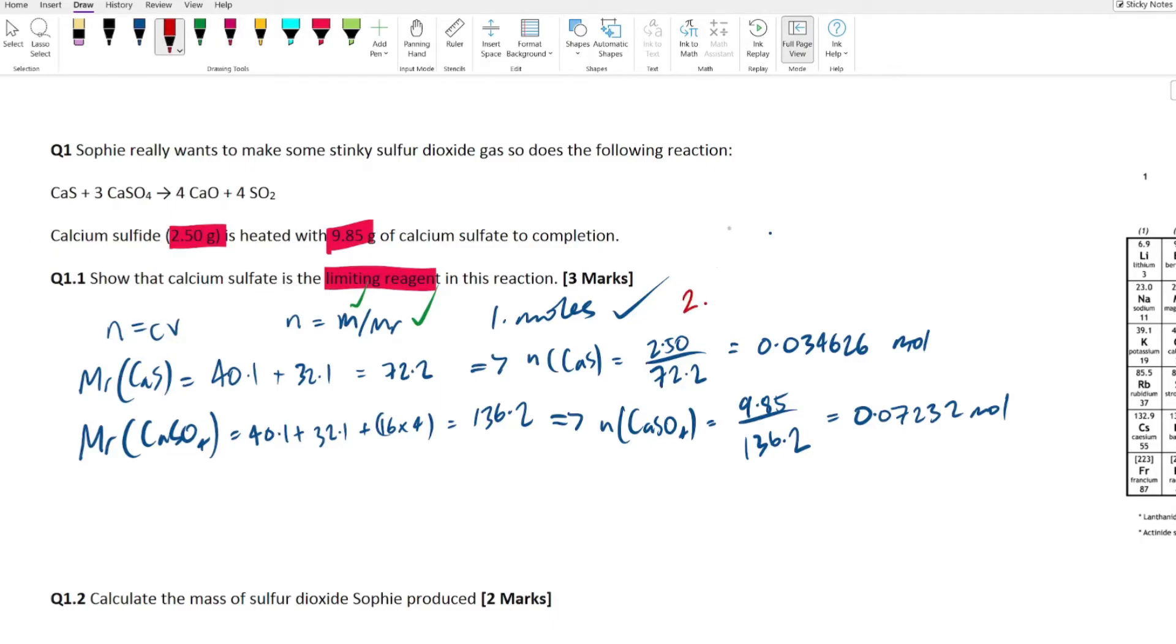All right, let's move this over and we're going to do these calculations in the calculator. We've got 2.5 and that is over 72.2. That gives us an answer of 0.034626 moles. Let's do this next one. 9.85 and that would be over 136.2. 0.07232. All right, cool. We are done. We've got the moles. Now that would be step one. What is step two going to be?